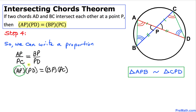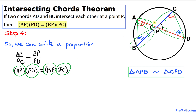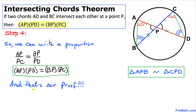So the product of AP and PD equals the product of BP and CP. That completes our proof for the intersecting chords theorem when two chords AD and BC intersect each other. Thanks for watching, and please don't forget to subscribe to my channel for more exciting videos.